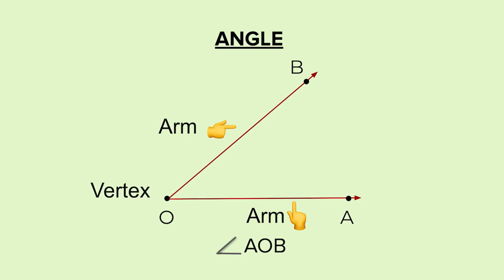We have a vertex in an angle, in a triangle, in a square, in a rectangle. The corners are called vertex in geometry.